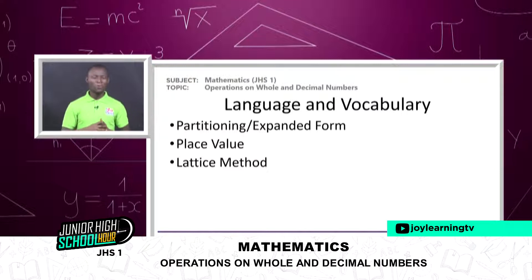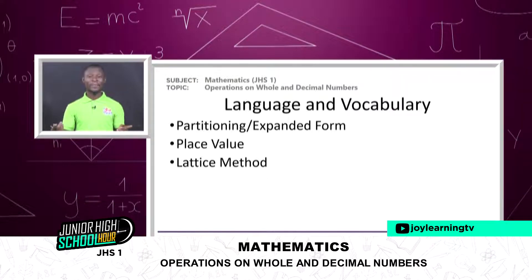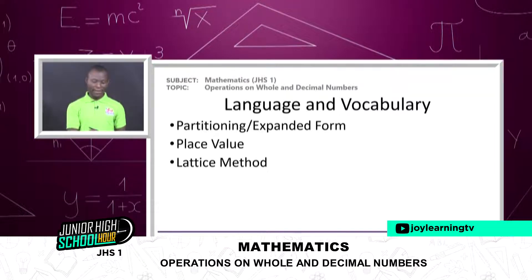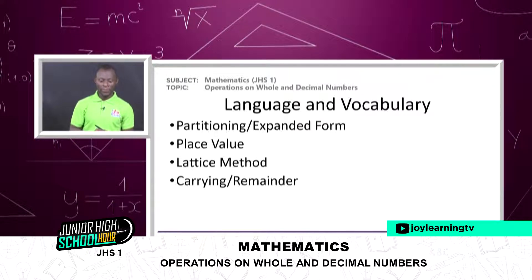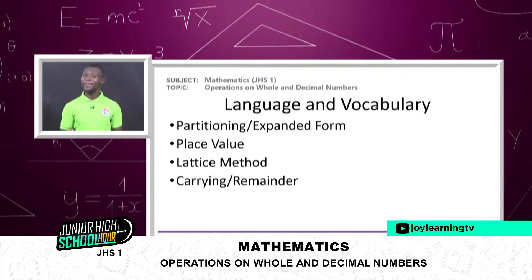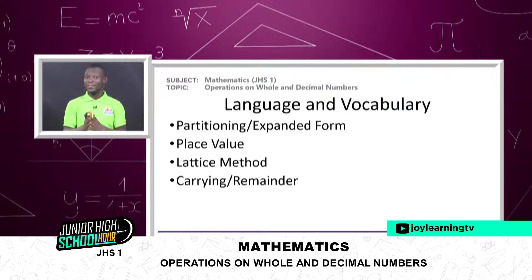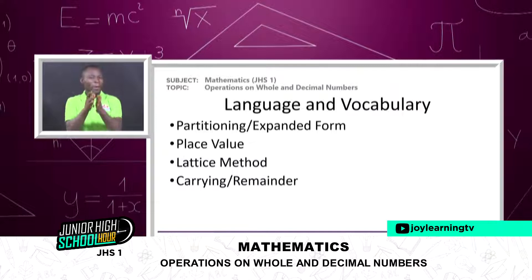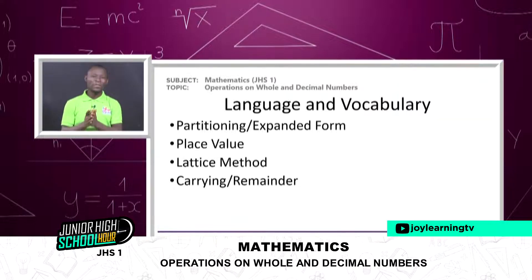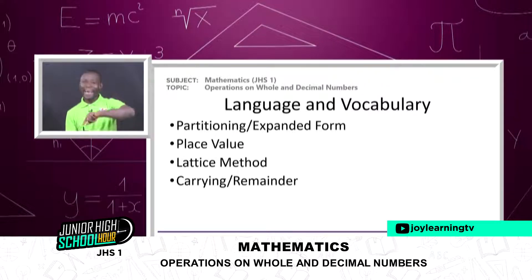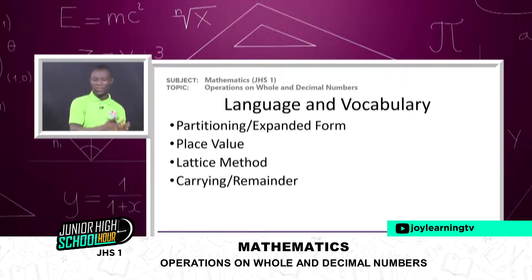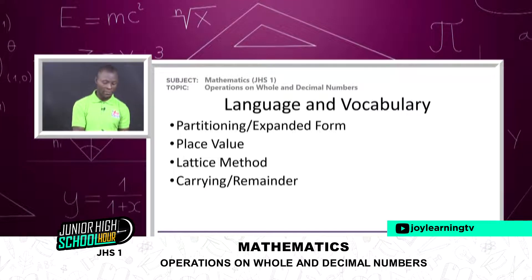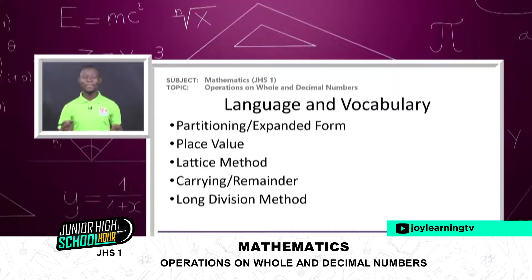Next we look at the lattice method — another interesting method of multiplying numbers, whether whole numbers or decimal numbers. We will be drawing lattices and using that process in multiplying numbers. Then there's the concept of carrying or remainder: when doing multiplication, addition, or subtraction, we sometimes carry a number from one position to the next, or write a remainder because the value exceeds the base we're working in. We then carry the tens to the next position.